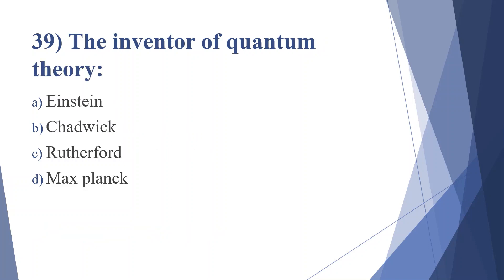Thirty-ninth question: the inventor of quantum theory — option A: Einstein, option B: Chadwick, option C: Rutherford, option D: Max Planck. Answer is option D, Max Planck.